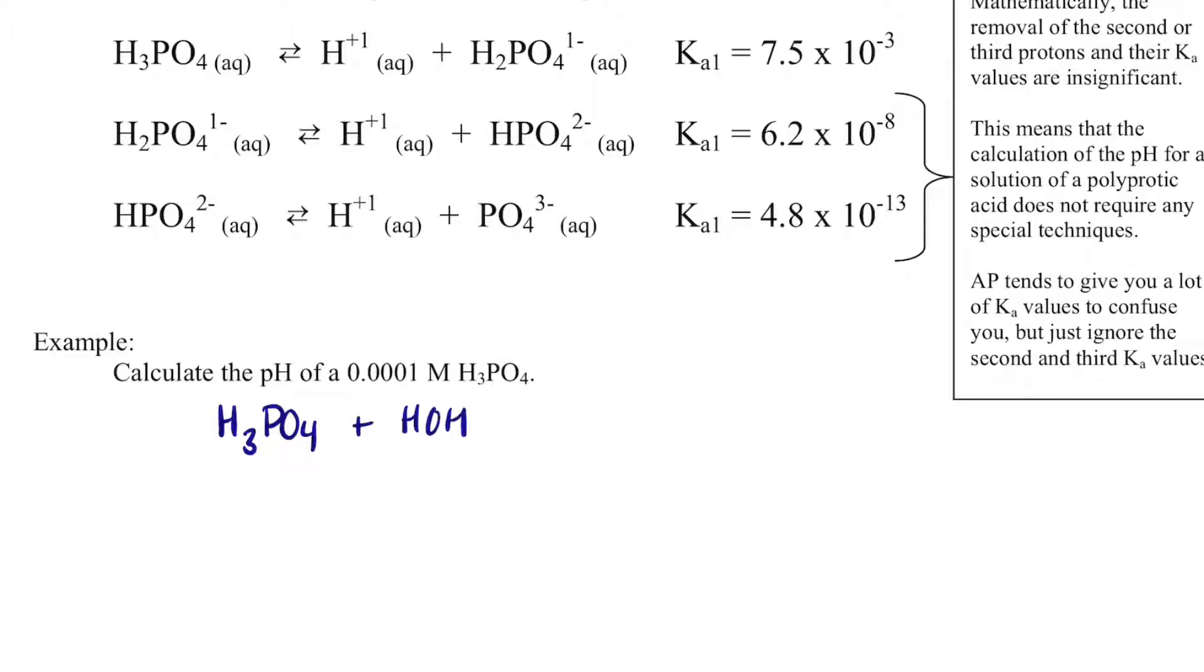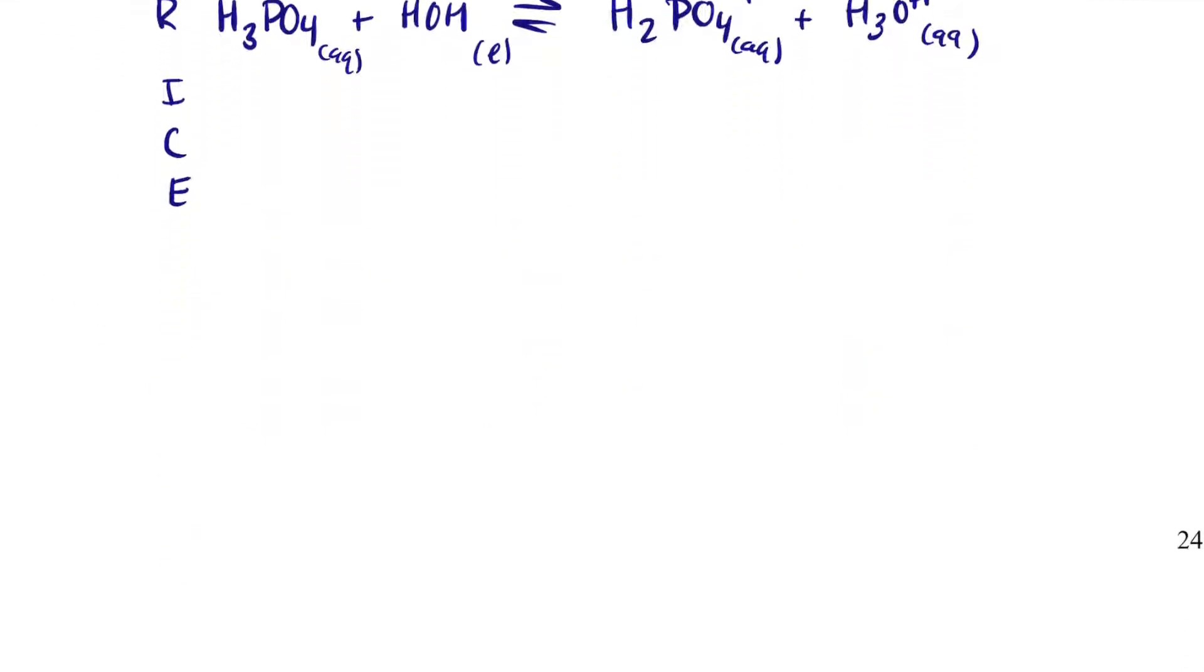H3PO4 plus HOH will give me H2PO4 with a 1 minus charge, plus H3O plus 1. Those will all be aqueous except for water. And I can set up a rice table. With my rice table, I know that H3PO4 is 0.0001. Initial is 0.0001, change is minus x, equilibrium is 0.0001 minus x. Water is just an x because it's a pure liquid. Zero, zero plus x, plus x, x and x.